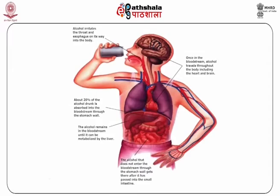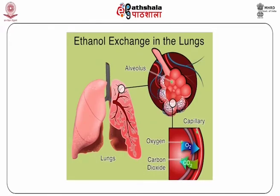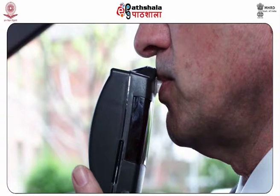Principle of testing: Alcohol is absorbed from the mouth, stomach and intestines and finally goes into the bloodstream. As soon as the blood reaches the lungs, a part of the alcohol moves to the alveoli of the lungs because alcohol is volatile. BAC is in proportion to the alcohol concentration in the alveolar air, and breath alcohol testing devices measure this alcohol in the alveolar air when exhaled. Instead of taking a driver's blood sample, his breath could be analysed on the spot.